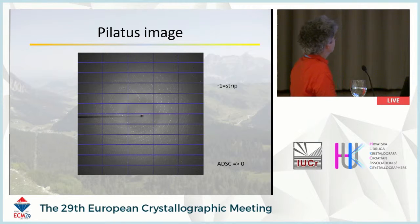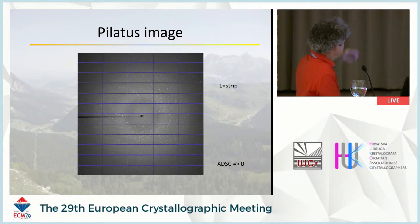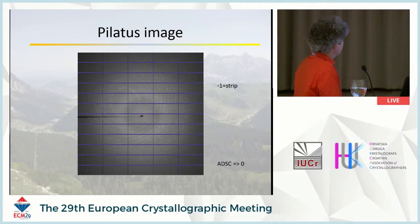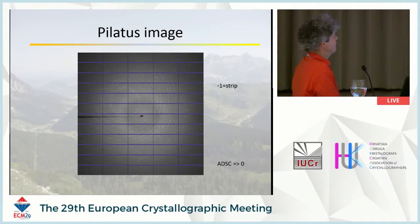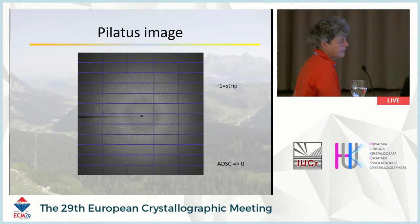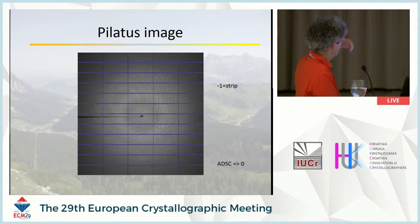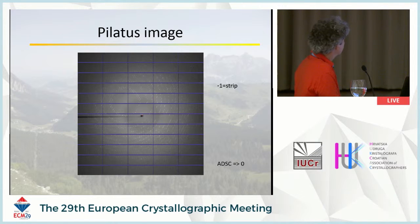There is a minor issue: in a Pilatus image, the inter-panel gaps where no phosphor exists are assigned the value minus 1, whereas in ADSC images those pixels are given the value 0. There is no standard for this. On the other hand, many tools can automatically determine these masked regions statistically because the values are so different from their surroundings.